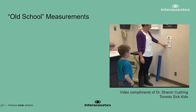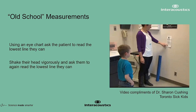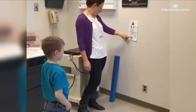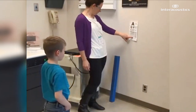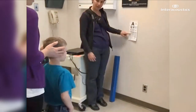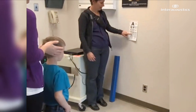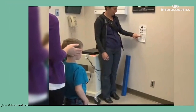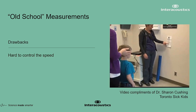This is the old-school method using a Snellen eye chart posted on the wall — bedside testing before computerized versions existed. In this video, courtesy of Dr. Sharon Cushing from Toronto SickKids, she's testing a very young child, which shows an advantage: you can test people of all ages. She has him read to the lowest line he can read, then starts shaking his head vigorously and asks him to read again. If the letters have to get two lines bigger before he can see clearly, we know he has a VOR impairment. Drawbacks include difficulty controlling speed, no feedback on pace, inability to separate right versus left head movements, and limited objectivity.